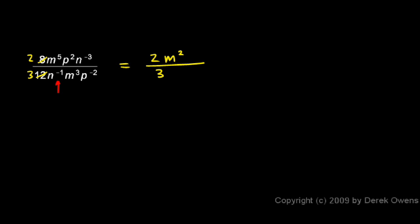So there's two n, base n, exponents multiplied together, the 1 and the positive 3. And when I multiply those two together, I add the exponents. So 1 and positive 3 add up to a positive 2. So I have an n to the power of 2 in the denominator.